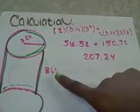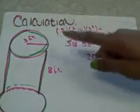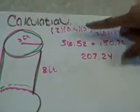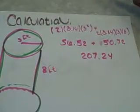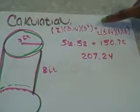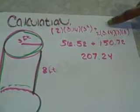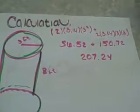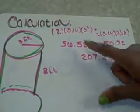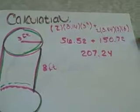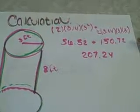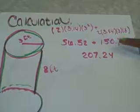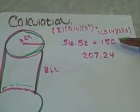The height is 8 feet and the radius is 3 feet. So 2 times 3.14 times 3 squared plus 2 times 3.14 times 3 times 8 equals 56.52 plus 150.72 equals 207.24.